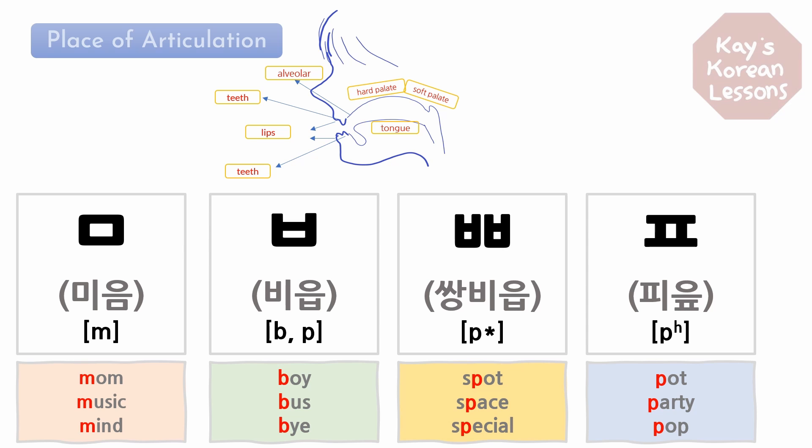The last one, ㅍ (피읖), sounds like P in pot, party, and pop. It's an explosive sound and exactly the same as P in English. Now you know these four Korean consonants and their sounds. I'll be coming back with the next bundle. See you then. Bye!